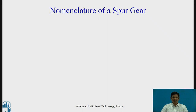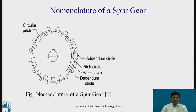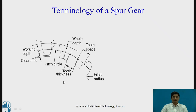In order to derive the equation, first we need to know the nomenclature of a spur gear. Important terms include the circular pitch, the addendum circle (the outermost), the pitch circle (the imaginary circle where contact happens), the base circle, the whole depth, the working depth, the clearance, the tooth thickness, the tooth space, and the fillet radius.